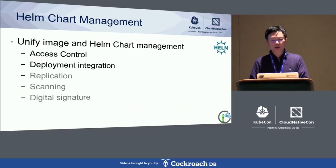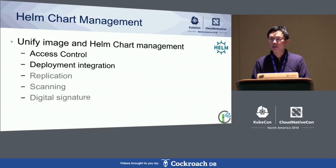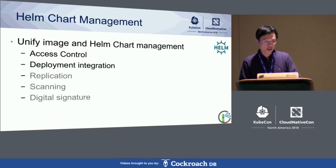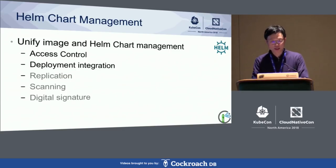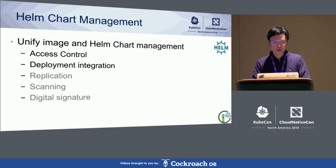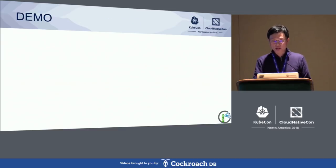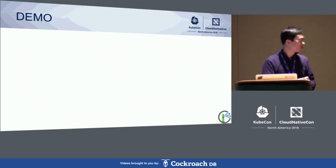The next feature is Helm chart management. Helm charts have become more popular for deploying applications on top of Kubernetes, helping us deploy a number of containers to run on Kubernetes. We unified image management and Helm chart repo management together to perform access control and deployment integration, giving you a consistent way to manage both artifacts. On our roadmap we also plan to build replication, signing, and scanning support for Helm charts. Now I'd like to hand over to my colleague Steven for a demo of Helm chart management and replication features.